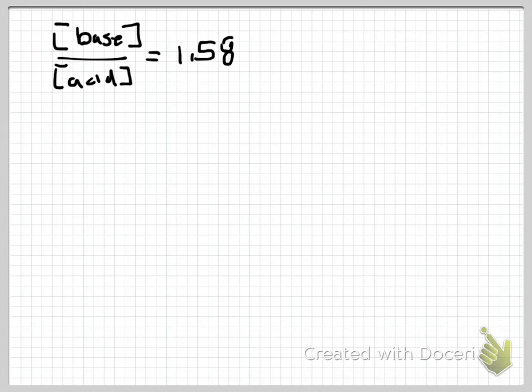The next step to solving this is to use the information that I wanted to create a 0.15 molar phosphate buffer. And that means that I want my concentration of my base plus my concentration of my acid needs to equal 0.15.